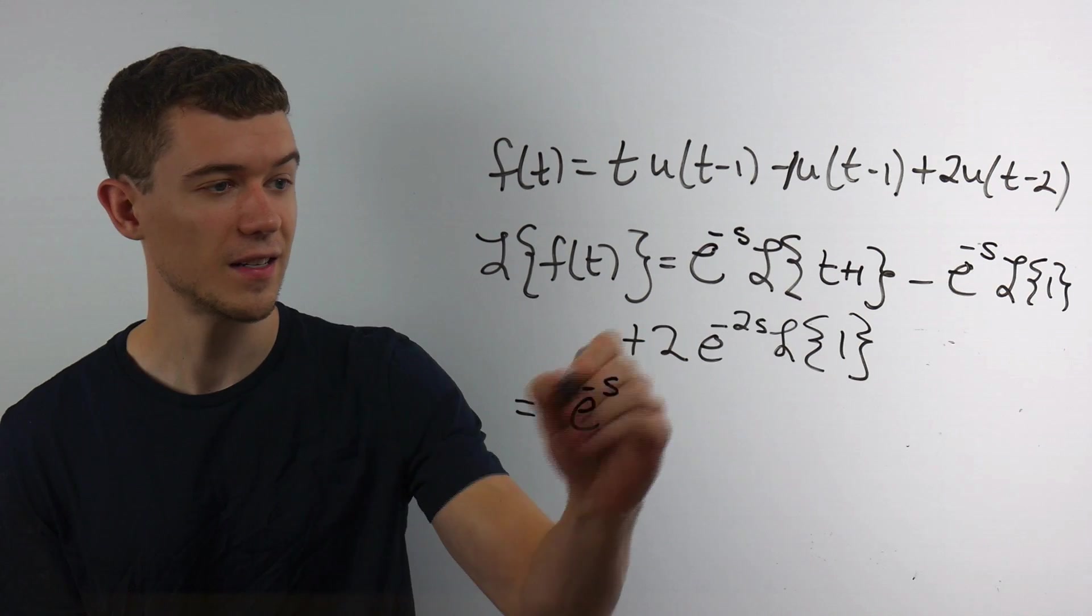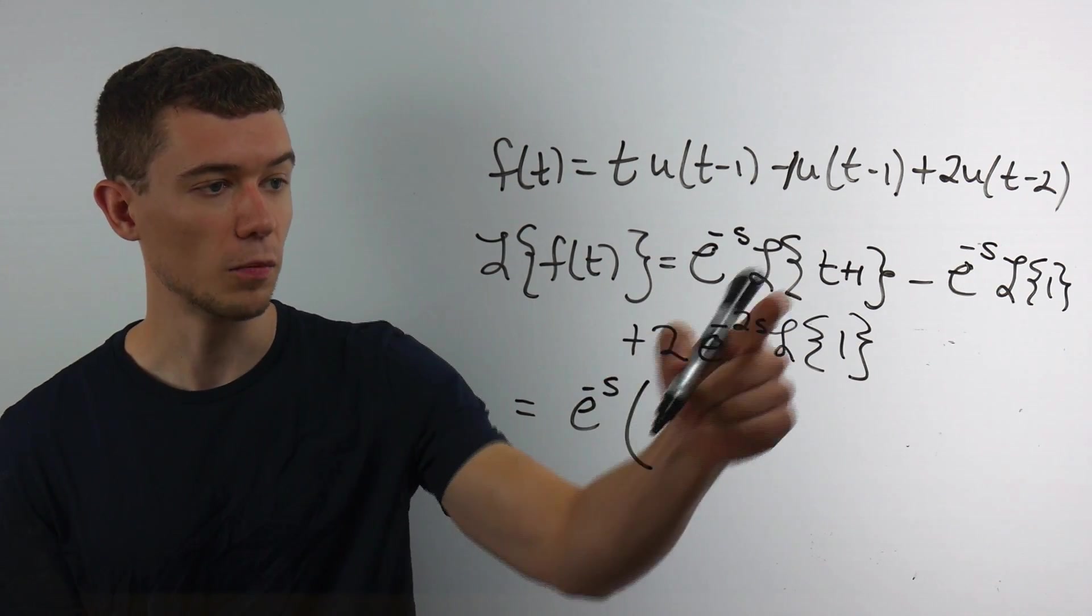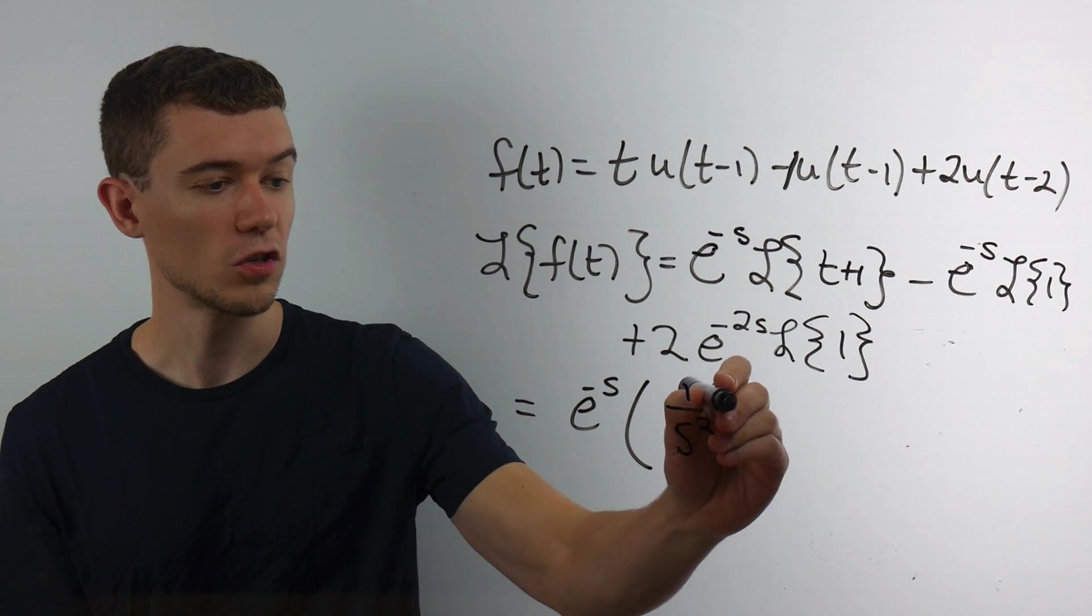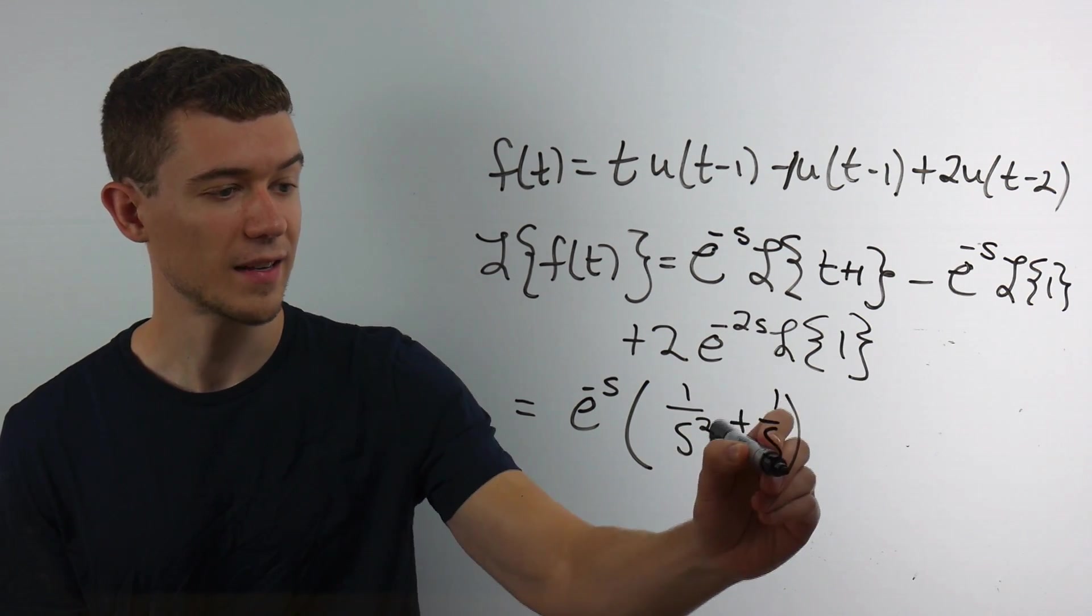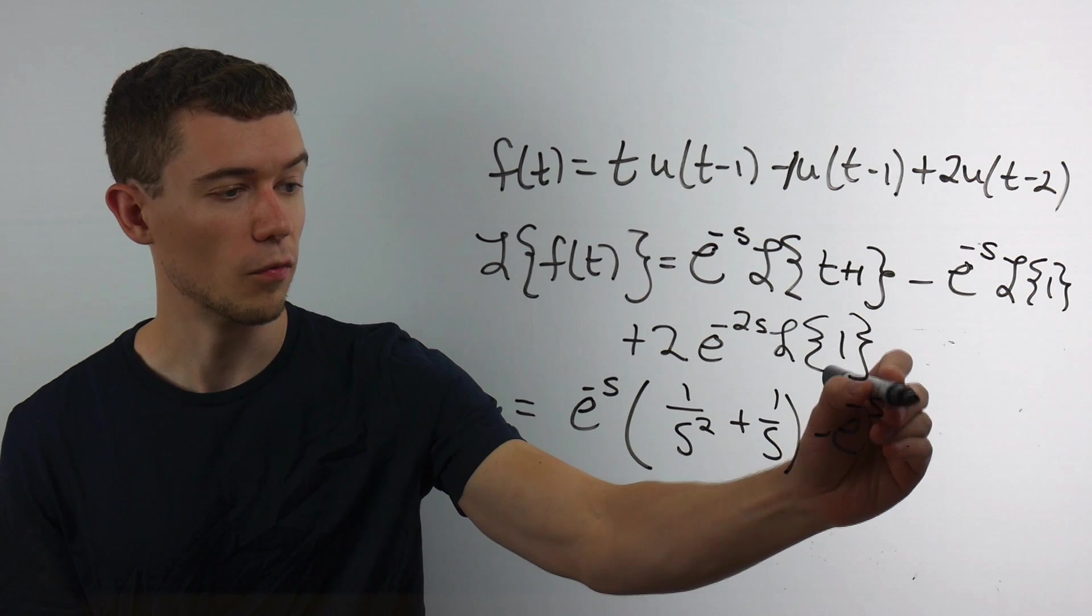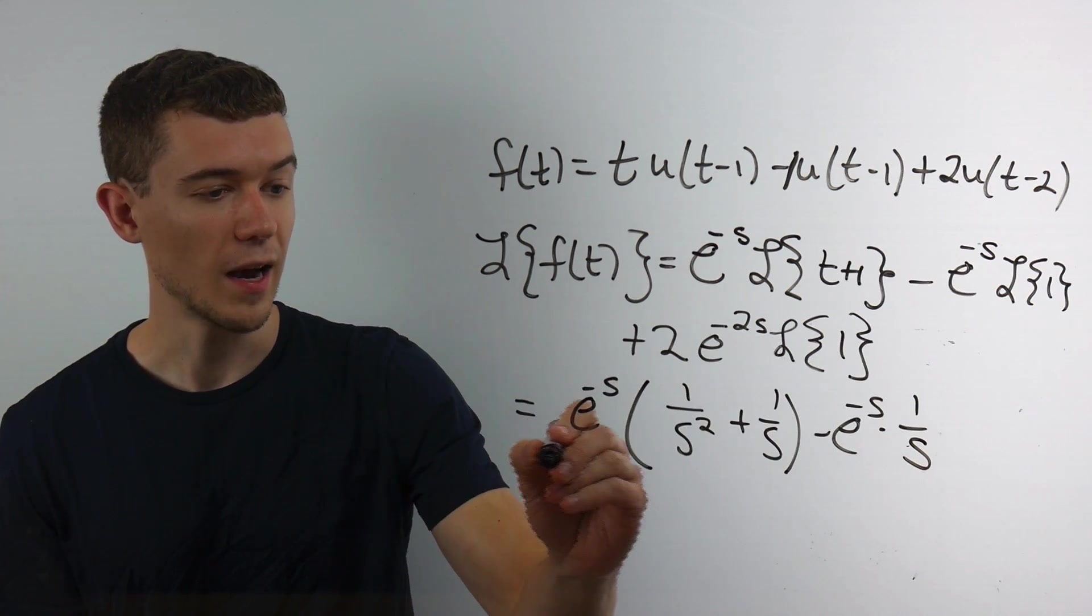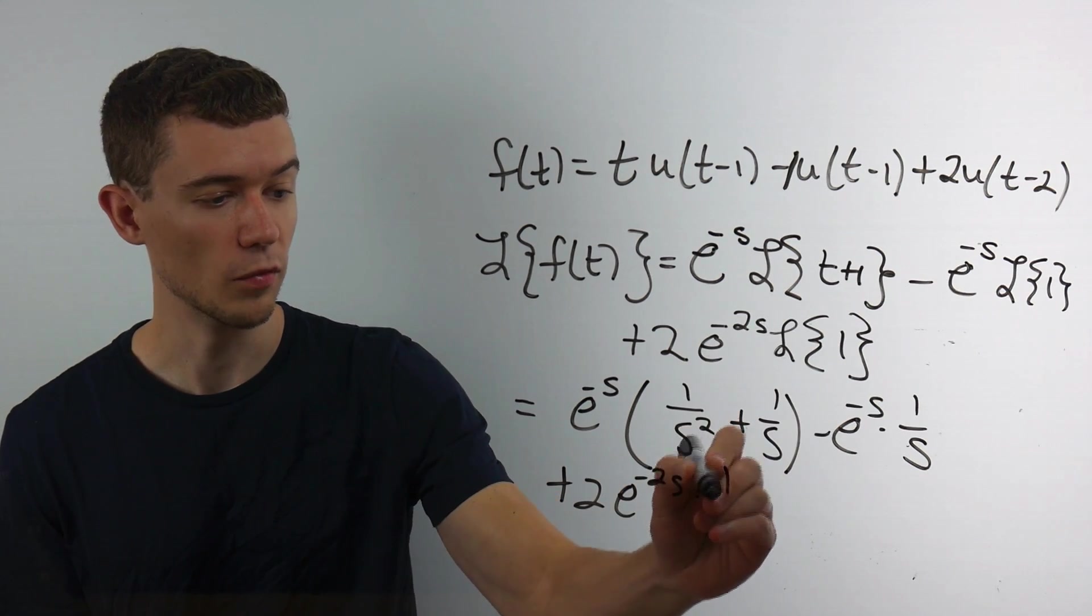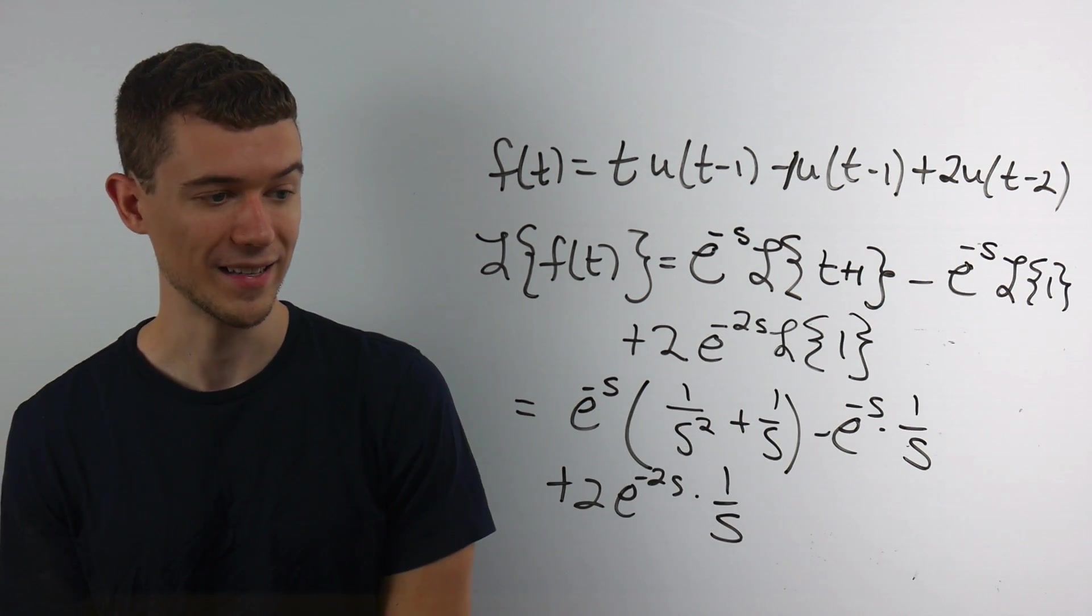So here, we would have e to the minus s times the Laplace transform of t is 1 over s squared. The Laplace transform of 1 is 1 over s. Minus e to the minus s. The Laplace transform of 1, again, is 1 over s. Here, I'd have plus 2 e to the minus 2s. The Laplace transform of 1 is 1 over s.